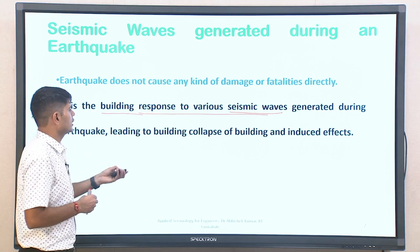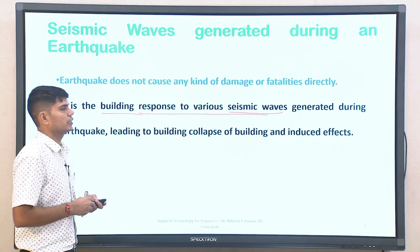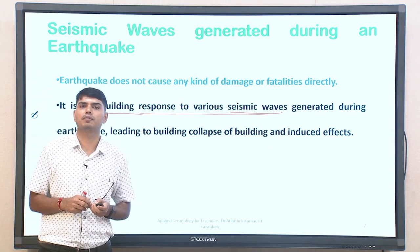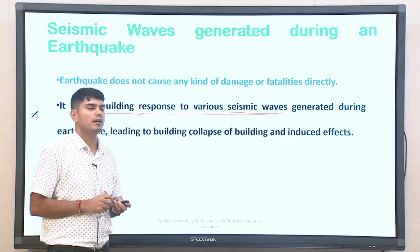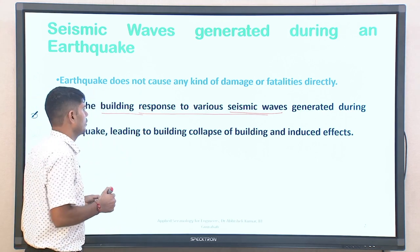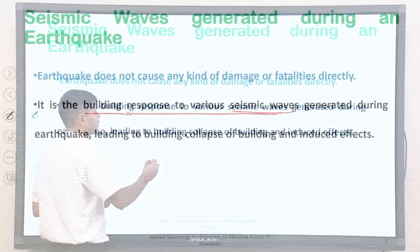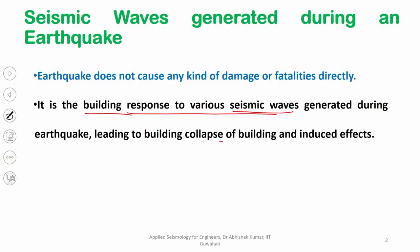Earlier, most of the time ground motion records were recorded using a rotating drum with a pencil sensing the vibration and marking it on a calibrated sheet. Later on, we also use different kinds of piezoelectric sensors that sense the vibration and convert it in terms of voltage values, and depending upon the calibration unit, we can convert and find out suitable values of ground vibration. So it is the response of the building to seismic loading which will define whether the building will undergo partial damage, complete collapse, and subsequently induced effects.